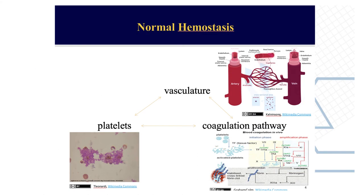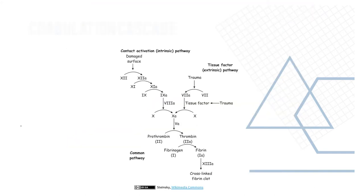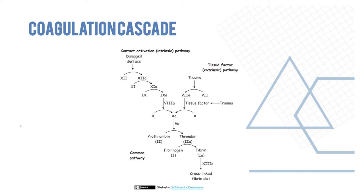Normal hemostasis — the way the body works to bring about clotting of blood — is an interplay between the vasculature, the platelets, and the coagulation pathway. To understand these disorders, you first have to understand the coagulation cascade, which is divided into an intrinsic and extrinsic pathway. Intrinsic is when there's a damaged surface like a damaged blood vessel; extrinsic is when there is external trauma.